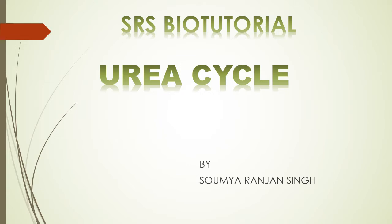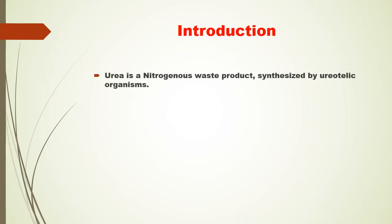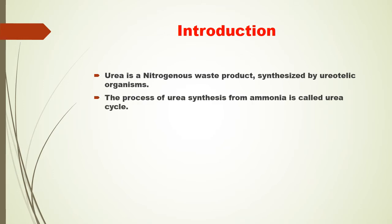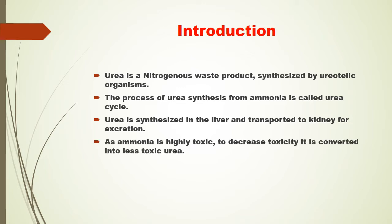Urea is a nitrogenous waste product synthesized by ureotelic organisms. The process of urea synthesis from ammonia is called the urea cycle. Urea is synthesized in the liver and transported to the kidney for excretion. As ammonia is highly toxic, to decrease toxicity in the body, it is converted into less toxic urea.